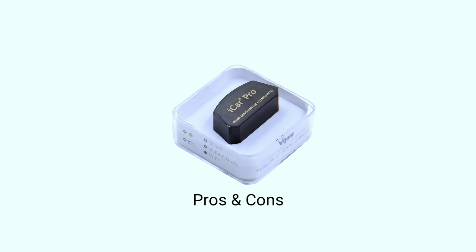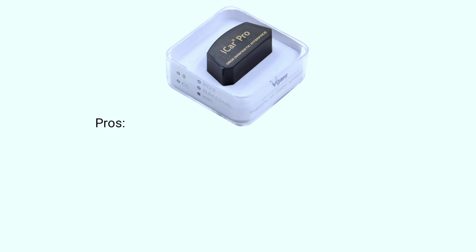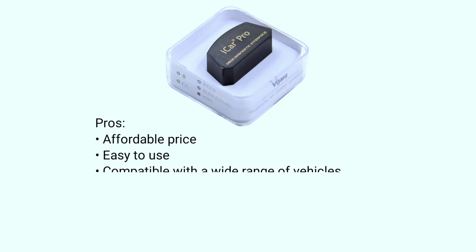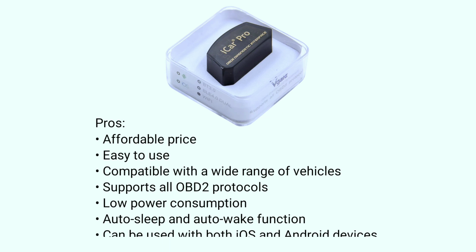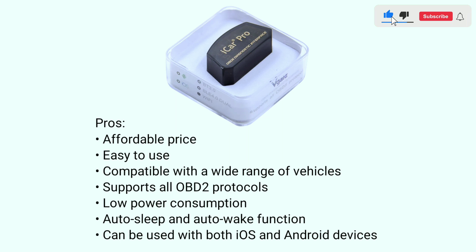Here are some pros and cons about the Vagate eCar Pro Bluetooth 4.0. Pros: affordable price, easy to use, compatible with a wide range of vehicles, supports all OBD-II protocols, low power consumption, auto sleep and auto wake function, and can be used with both iOS and Android devices.